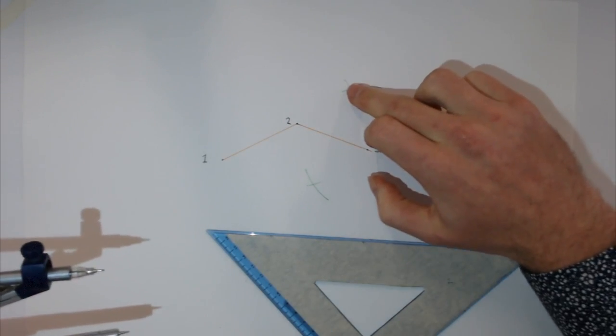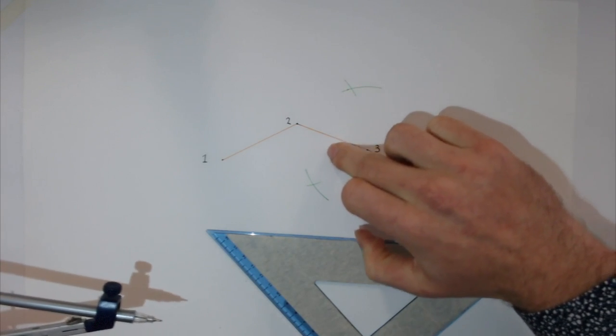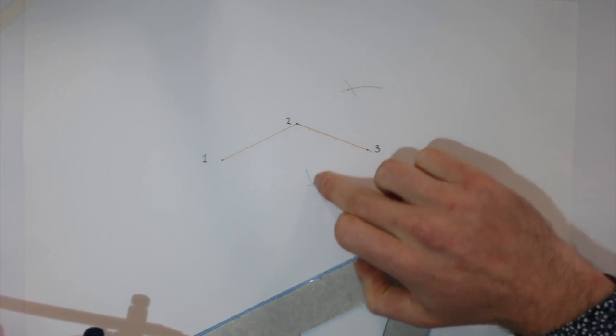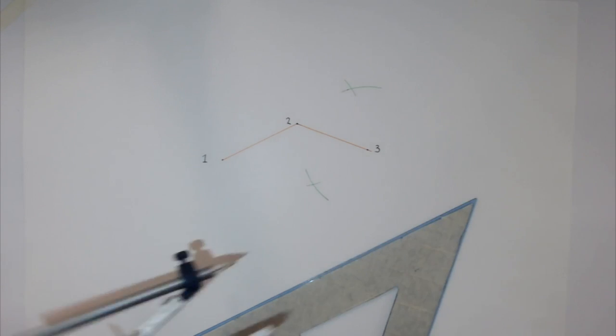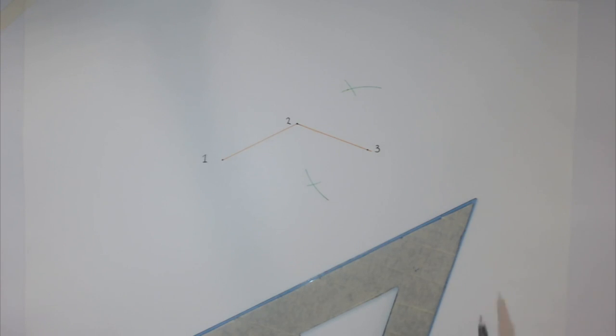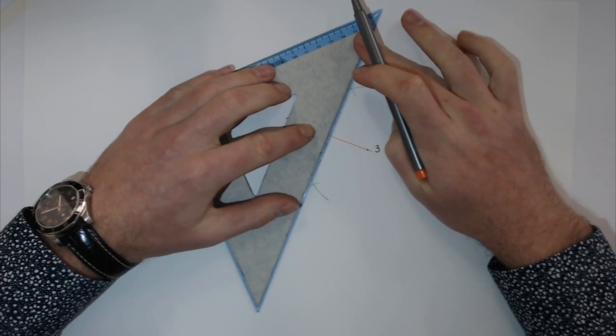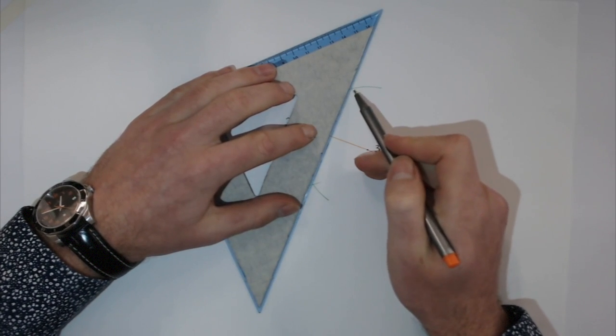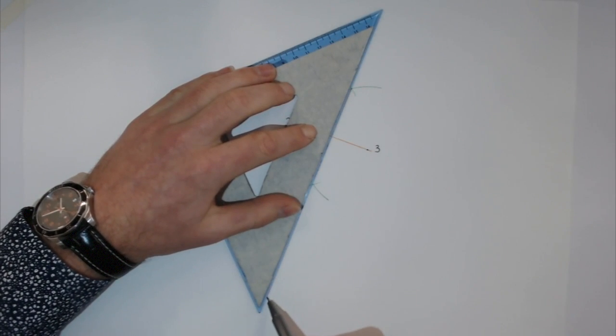Now I'll connect up these two intersection points. This takes me through the exact center of points two and three. I'm going to carry this line further using a light construction line and bring it down through here.